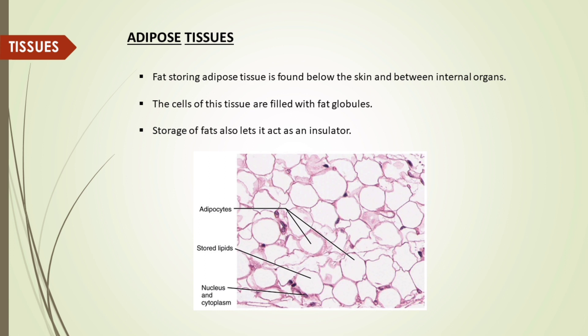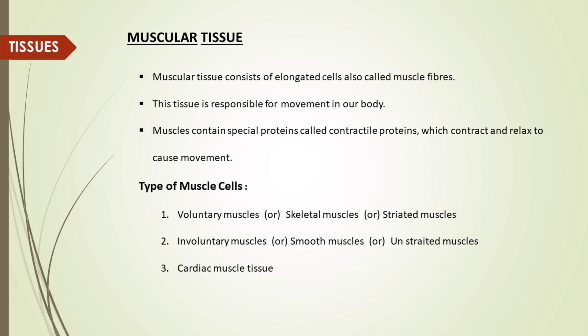Fat-storing adipose tissue is found below the skin and between internal organs. The cells of this tissue are filled with fat globules. Storage of fats also lets it act as an insulator.